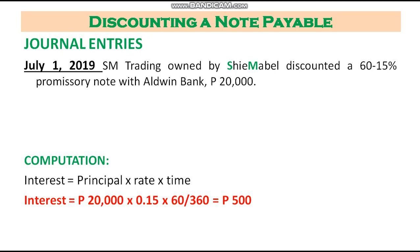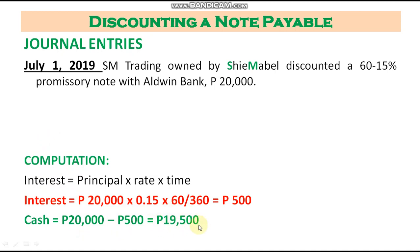Since we issued the note — meaning we promised to pay — our note is a notes payable. Since this is interest-bearing, the interest we computed is interest expense. So the 500 pesos is interest expense. Since the 500 pesos interest is already deducted, the cash we will receive is 20,000 minus 500, which equals 19,500 pesos.